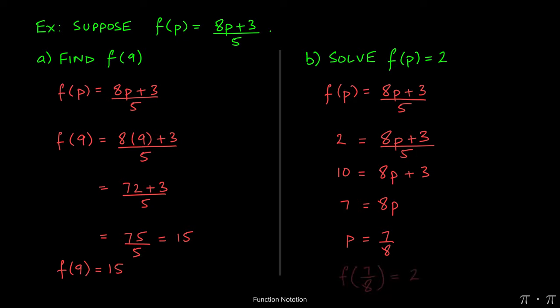What this means is that when we take 7 over 8 as the independent variable and we plug it into f, the output of the function is going to be 2.